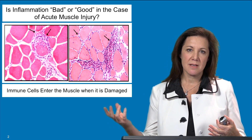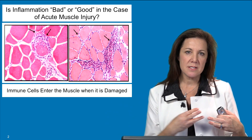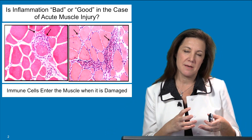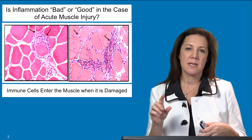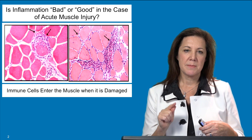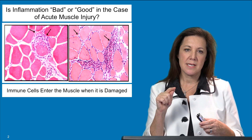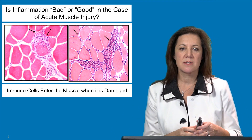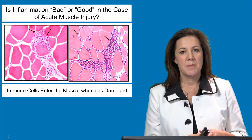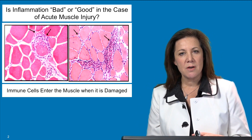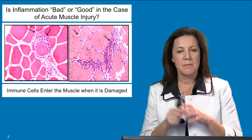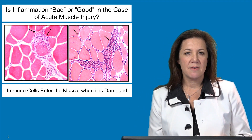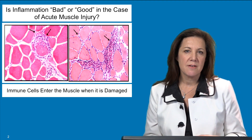When muscle is injured, immune cells come into the muscle and into the endomysial space, where they envelop and invade muscle fibers. On this slide you can see small hematoxylin-positive cells enveloping some of the fibers and sitting in between them — this is known as inflammation. We often hear about inflammation in a negative context, but is it really negative for muscle repair?